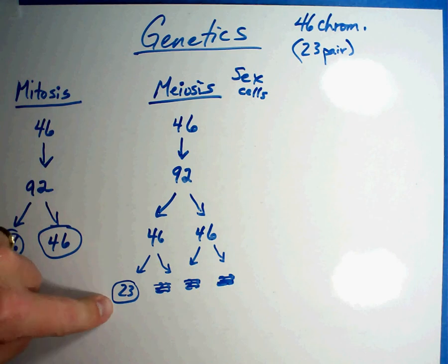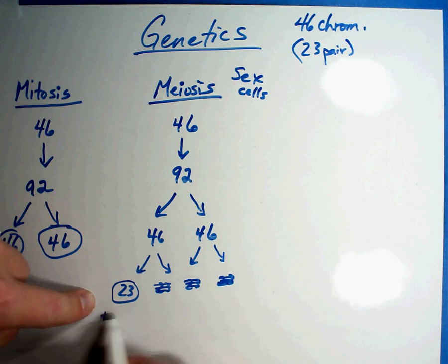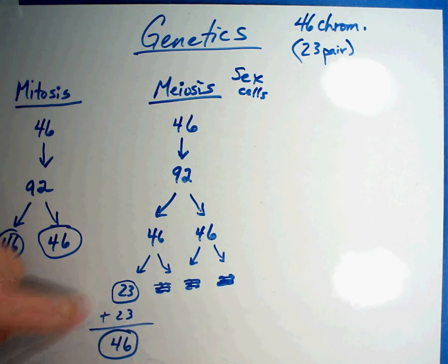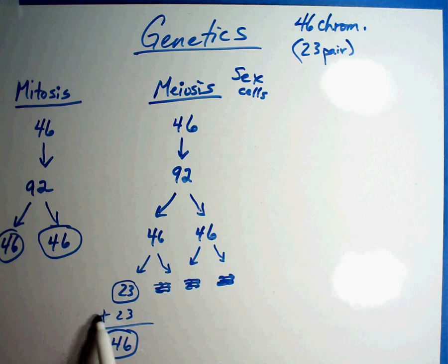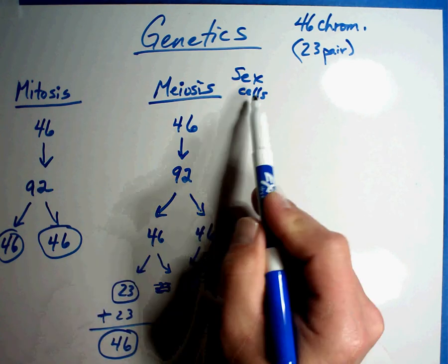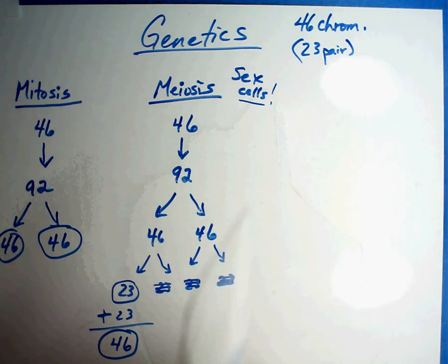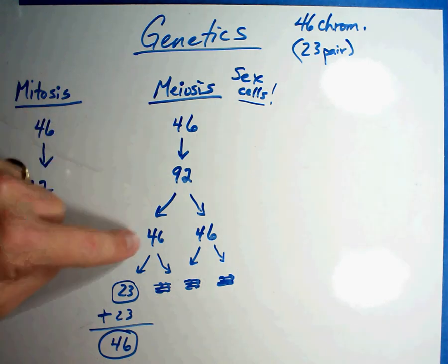If that egg were to be fertilized, then it would get 23 chromosomes from the male, which would give that child exactly 46 chromosomes. And so the process of making sex cells is different, but it looks very similar to mitosis. The process looks the same except it does it twice.